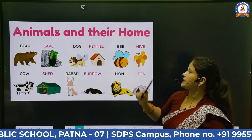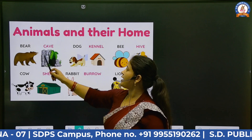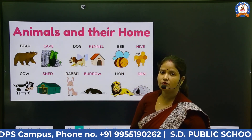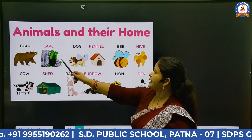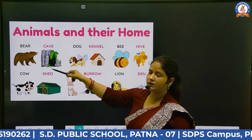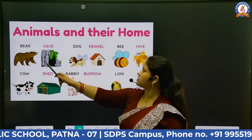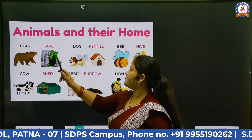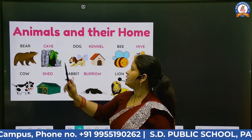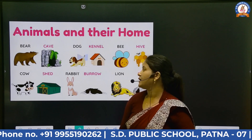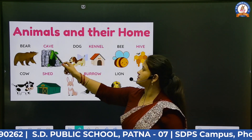Without taking more time, let's get started. Now we will talk about bear. Where does bear live? Bear lives in a cave. You can see — look at the board. Many kinds of animals with their homes. First one is bear, and bear lives in cave. The spelling of cave is C-A-V-E.